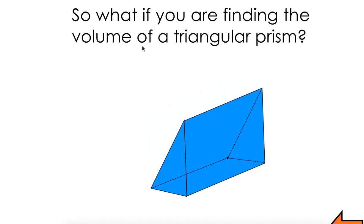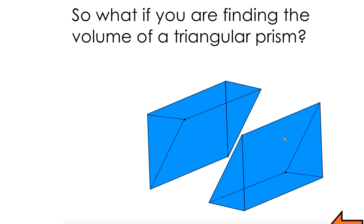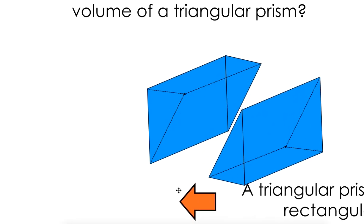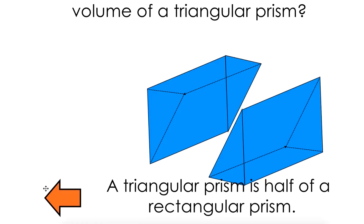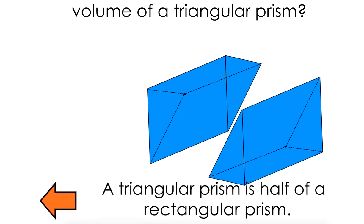So what if you are finding the volume of a triangular prism? Well, a triangular prism is just really half of a rectangle. It's just half of it. So you're doing the same idea. It's half of a rectangle. A triangular prism is half of a rectangular prism.